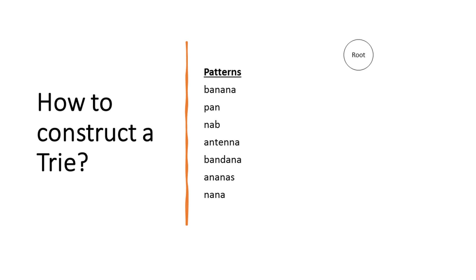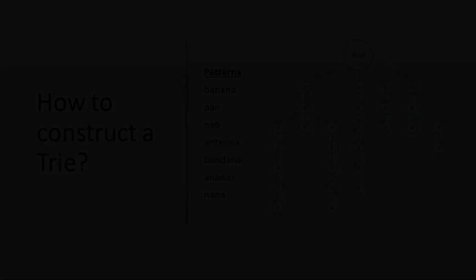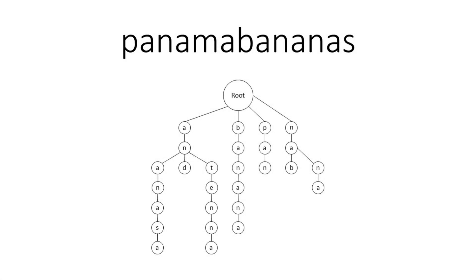To understand how to construct a trie from a collection of patterns, we start with a root. The first pattern is 'banana' — from the root, the first character is 'b,' the next is 'a,' and we continue on. For the next pattern 'pan,' we start from the root. There is no 'p,' so we create a new branch 'p,' then 'a' and 'n,' creating the rest of the branch. The resulting rooted tree is called a trie. Every pattern is a path from the root to a leaf.